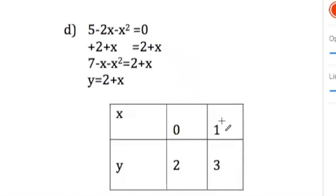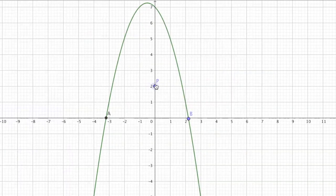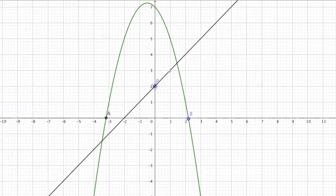So, 0, 2 and 1, 3 are points that you will plot. So, we have 0, 2, 1, 3. Here we go.